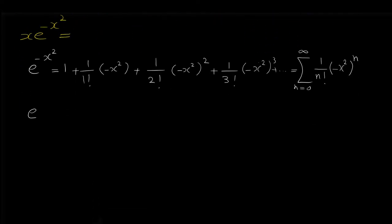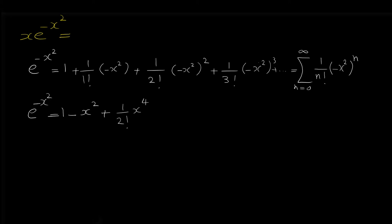We can rewrite this Maclaurin series: e to the negative x squared equals 1 minus x squared, because the negative times positive gives minus, and 1 over 1 factorial is 1. Then negative x squared raised to the power of 2 cancels the negative sign, giving plus 1 over 2 factorial times x to the 4. In the next term the power is odd so the negative remains, giving minus 1 over 3 factorial times x to the 6. So the terms alternate positive and negative.